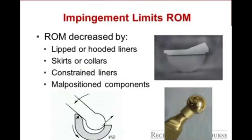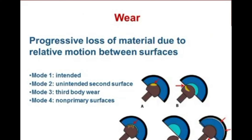Anything that decreases range of motion to impingement can increase dislocation risk. These include lipped or hooded liners, skirts or collars, constrained liners, and malpositioned components. Wear refers to progressive loss of material due to relative motion between surfaces — at intended surfaces such as the femoral head and polyethylene liner, or at unintended surfaces. When hips dislocate or subluxate, stripe wear can occur, as can backside wear between the polyethylene and acetabular component, or wear from femoral neck impingement on the cup.